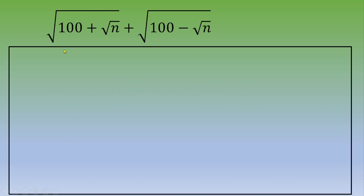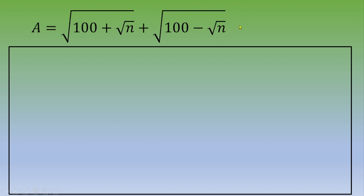The first step is to give a name to this quantity. Let's call a = √(100 + √n) + √(100 − √n). Now the second step is to make these square roots disappear.